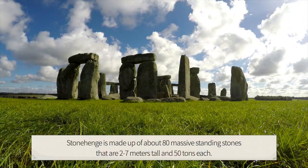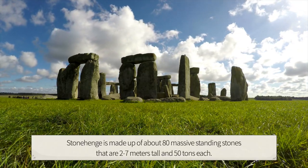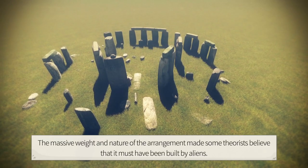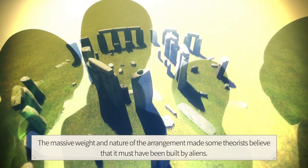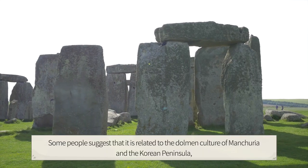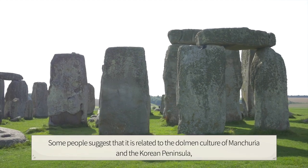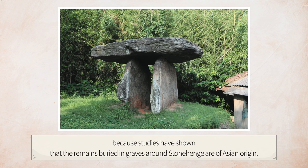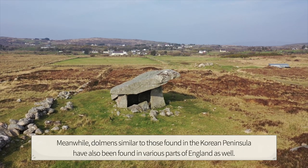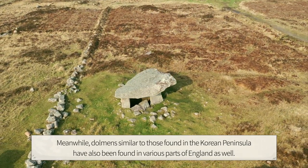Stonehenge is made up of about 80 massive standing stones that are 2 to 7 meters tall and 50 tons each. The massive weight and arrangement led some theorists to believe it must have been built by aliens. Some suggest it is related to the dolmen culture of Manchuria and the Korean Peninsula, as studies have shown that remains buried in graves around Stonehenge are of Asian origin. Additionally, dolmens similar to those found on the Korean Peninsula have been found in various parts of England.